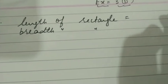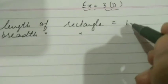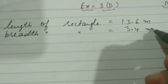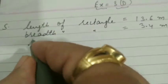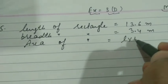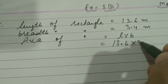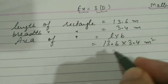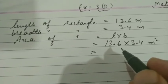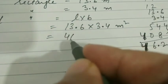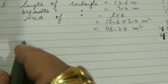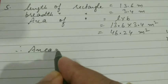The length of the rectangle is 13.6 meters and the breadth of the rectangle is 3.4 meters. First of all, we find the area of the rectangle. The formula for the area of a rectangle is length × breadth. Length is 13.6 and breadth is 3.4, giving us 46.24 square meters. Now we have to find the side of the square.